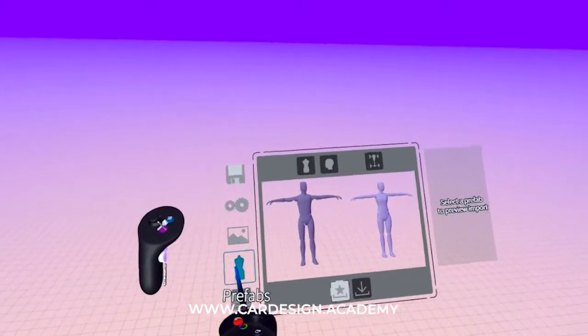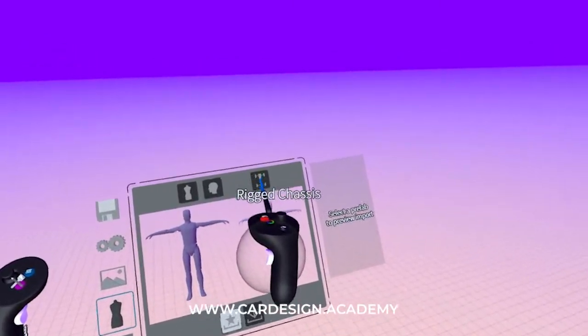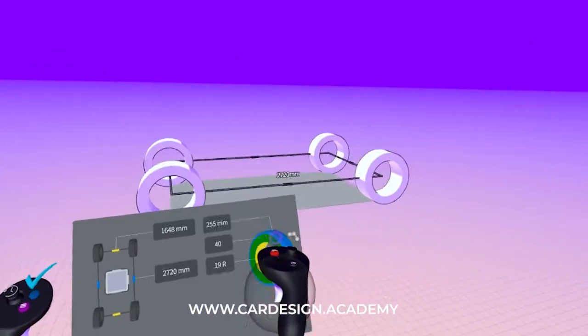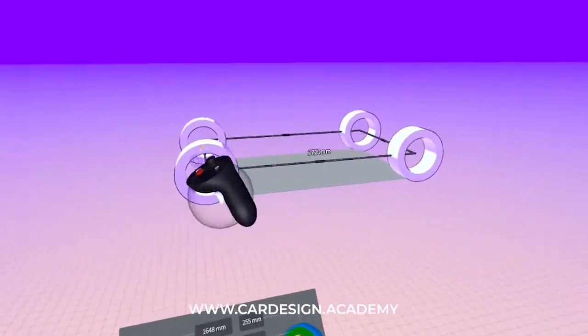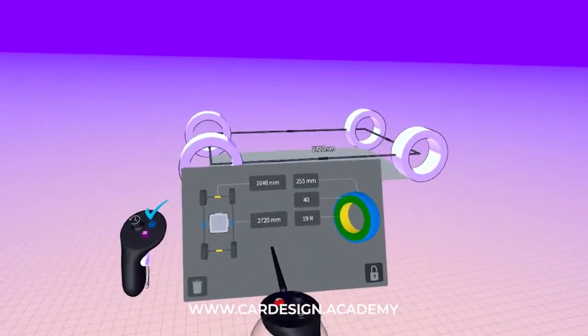If I go into my Prefabs menu, you'll see a little image of a chassis here called Rigged Chassis. I'm going to click on it and you'll see a set of wheels and also a set of dimensions.